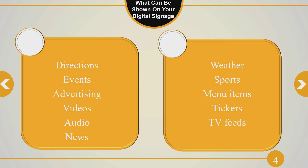For example, a coffee shop in a tourist area could show local weather so people know how to dress. Restaurants are now switching to digital menus instead of print menus or boards with little white letters, because they're so easy to change. You can show a news, weather, or sports ticker across the screen, and you can even show TV channel feeds. Really, anything you can show on a computer screen.